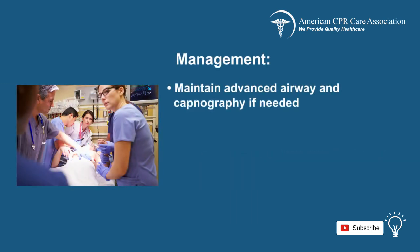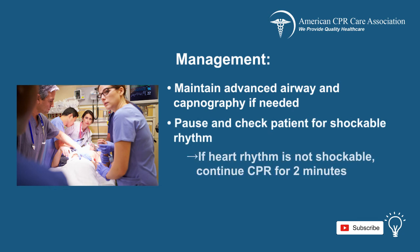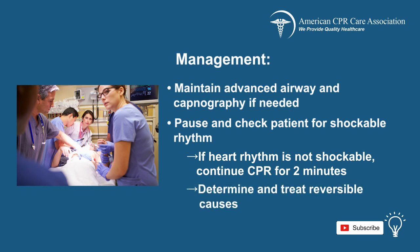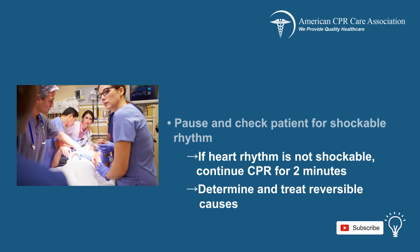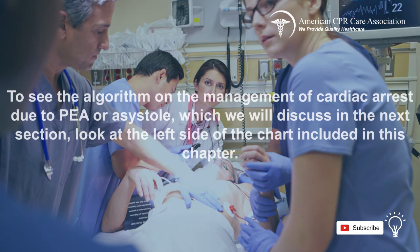Remember to maintain an advanced airway and capnography if needed. Pause and check the patient for a shockable rhythm. If the heart is not shockable, continue performing CPR for two minutes and try to determine and treat the reversible causes. To see the algorithm on the management of cardiac arrest due to PEA or asystole, which we will discuss in the next section, look at the left side of the chart included in this chapter.